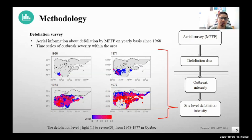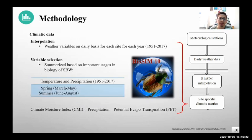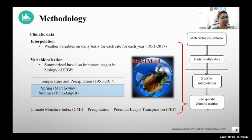Secondly, we acquired the defoliation information from the Ministry of Quebec, which has been conducting defoliation surveys since 1968 to categorize the level of defoliation into light, moderate, and severe. From this, we had a time series of outbreak severity from 1967 to 2017 to have site-level defoliation intensity for each site and each year. For each site, we used BioSIM to interpolate weather variables on a daily basis from 1951 to 2017, summarizing them into variables important to spruce budworm biology and black spruce growth — specifically spring and summer temperature and precipitation. We also calculated the climate moisture index and the difference between precipitation and potential evapotranspiration.